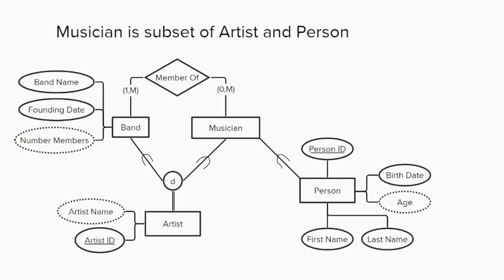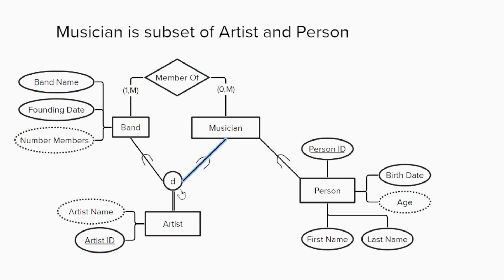For a band, the artist name will simply be a new attribute of the band entity called band name. Note that every band will inherit an artist ID from the artist entity, but musicians will now inherit both an artist ID from the artist and a person ID from the person. The person entity needs a person ID since first and last names are not enough to distinguish people with the same names, and although it may be unlikely for two people with the same name to have the same birth date, it's not impossible.